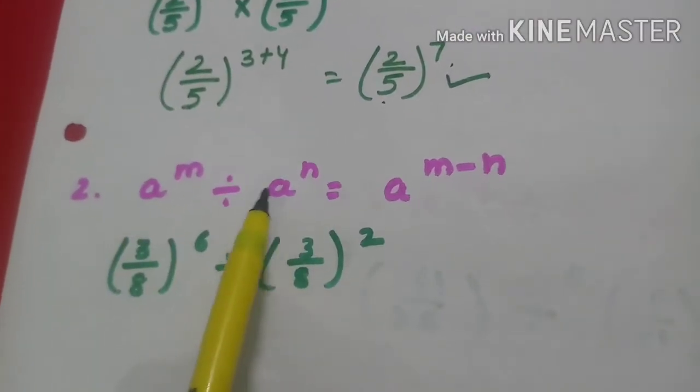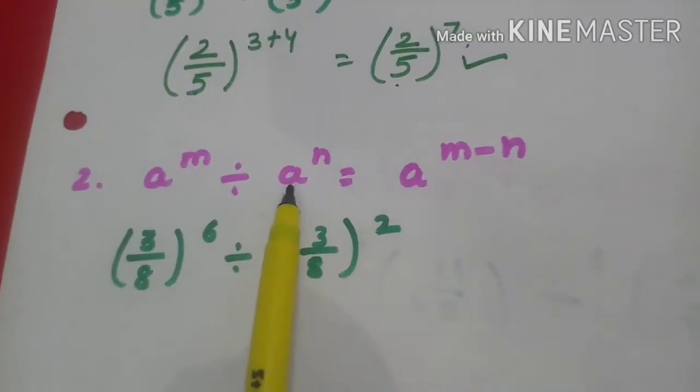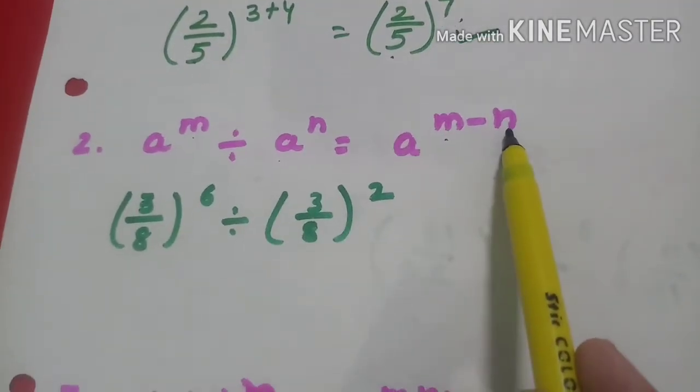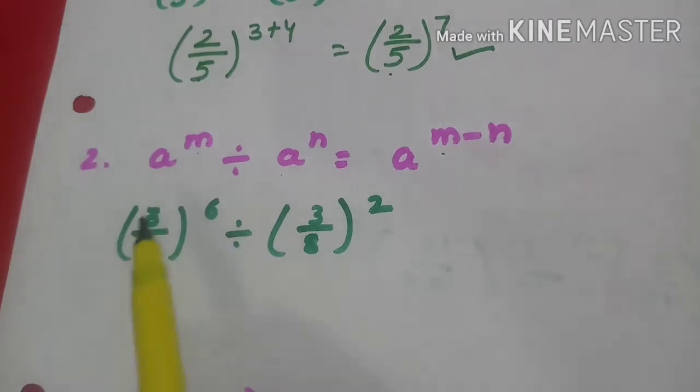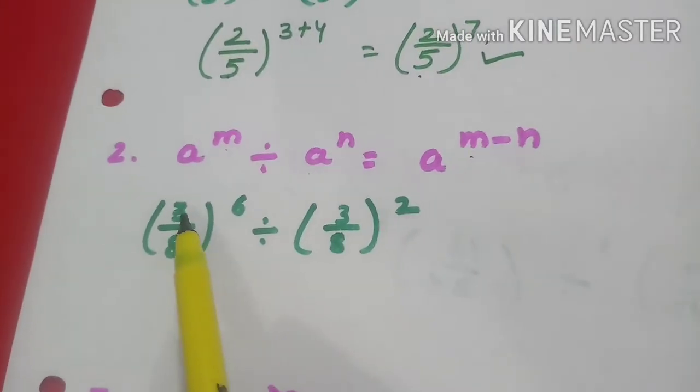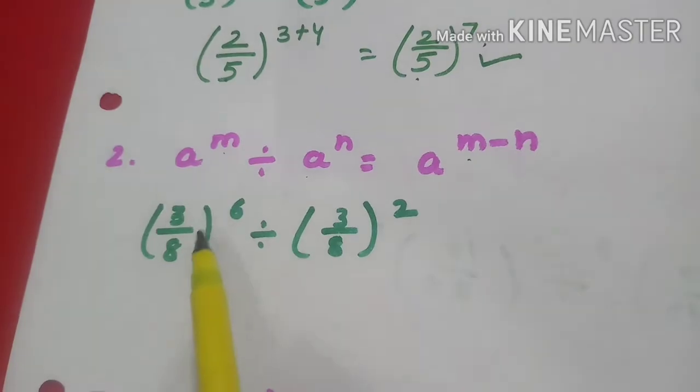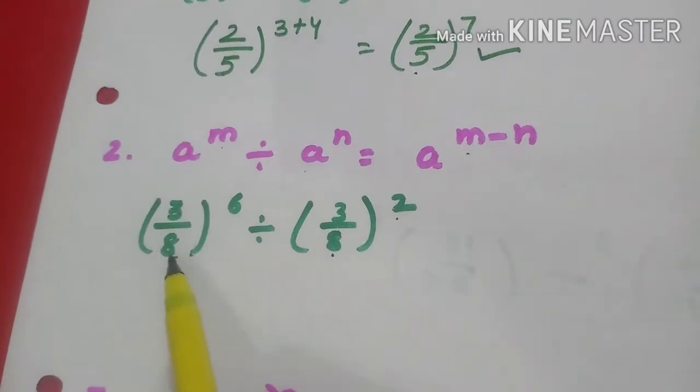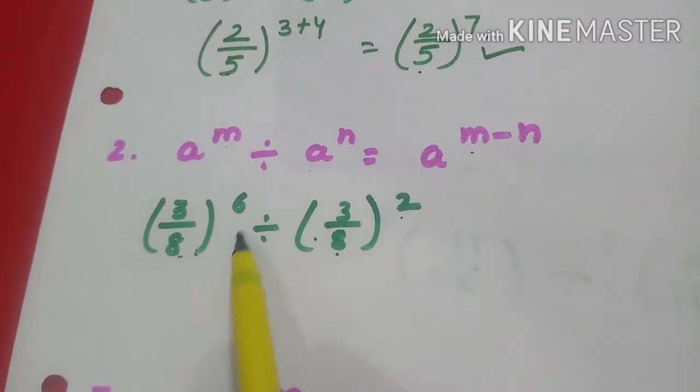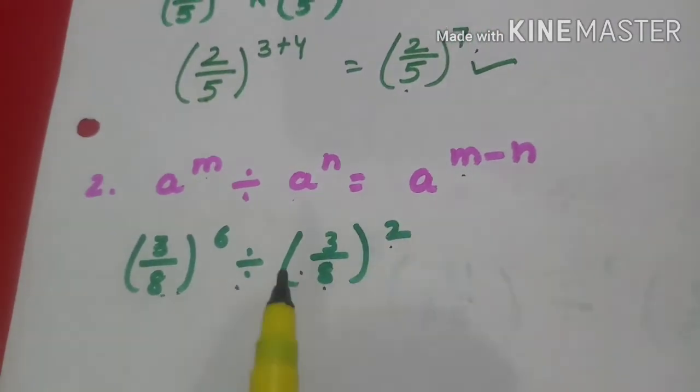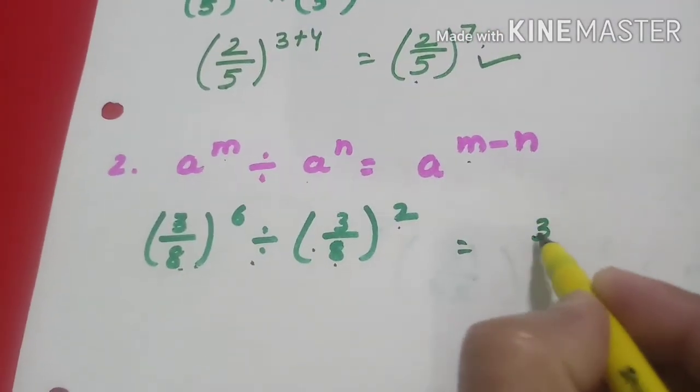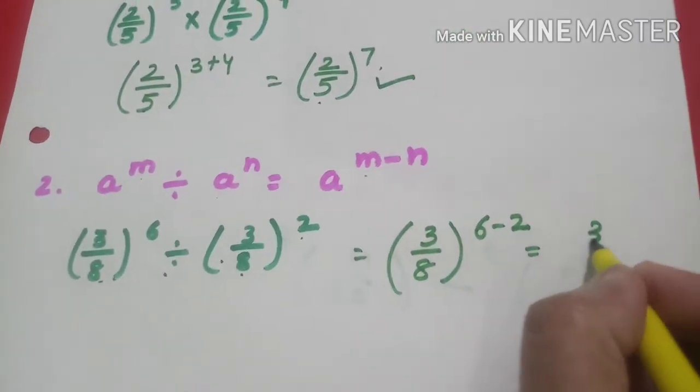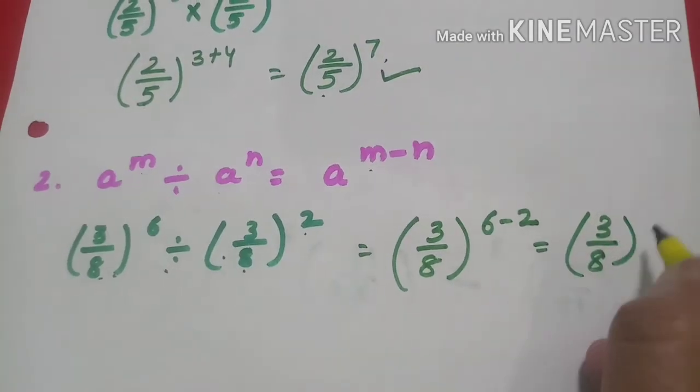The second law says when I divide two numbers with the same base and different powers, the powers get subtracted on the same base. Let's understand through one example. I have (3/8)⁶ divided by (3/8)². Here bases are the same: 3/8. The operation is division, so the powers get subtracted: 6 - 2. So it becomes (3/8)⁴. That will be my answer.